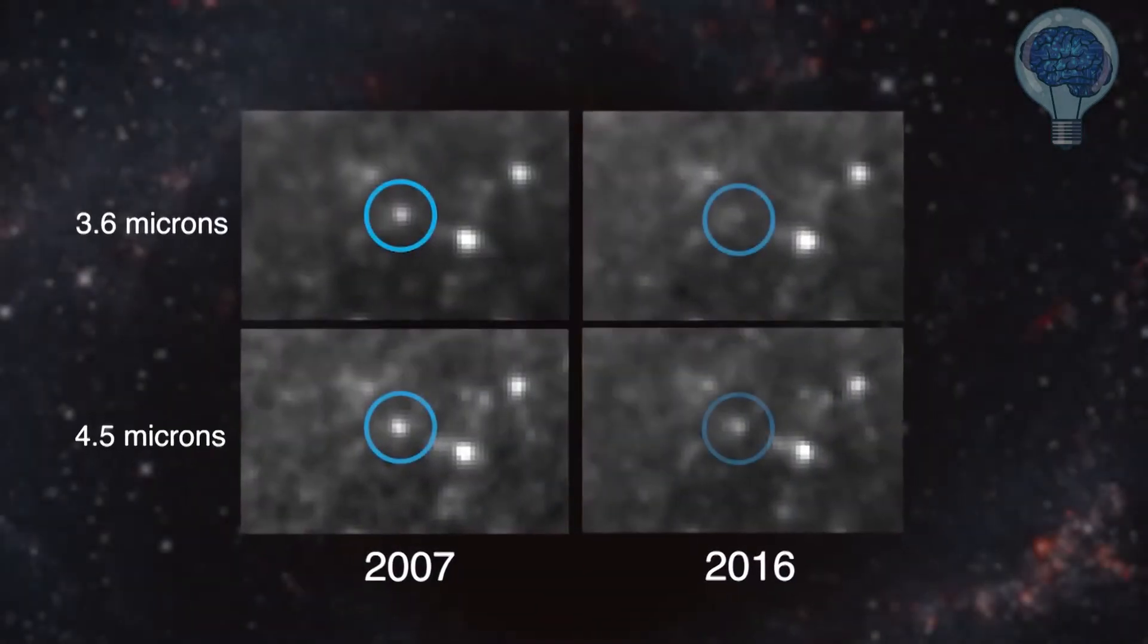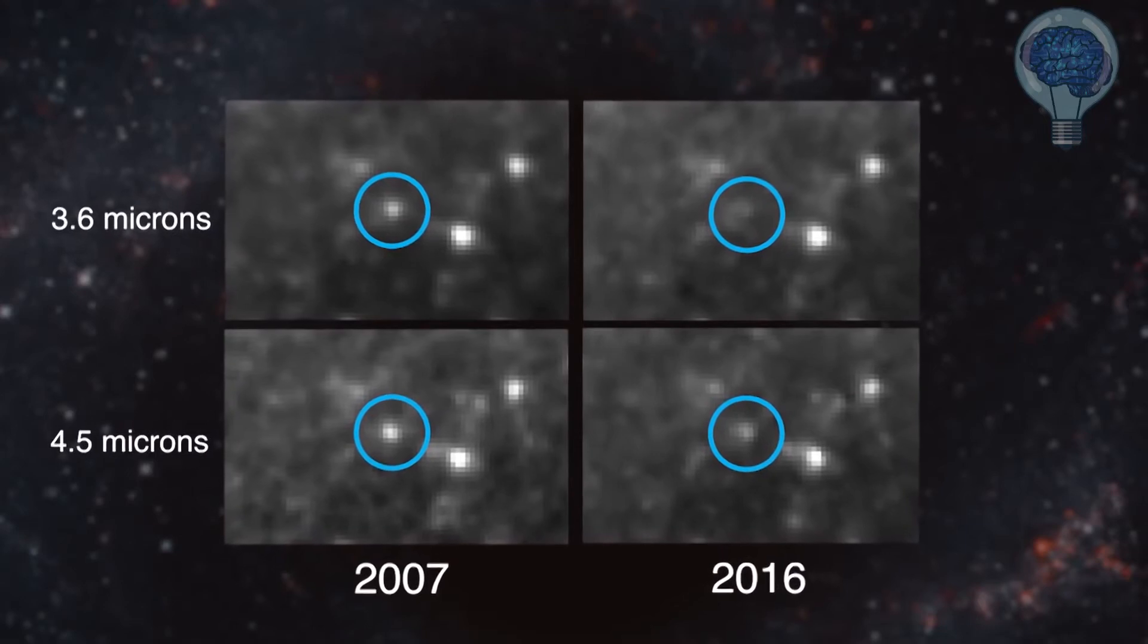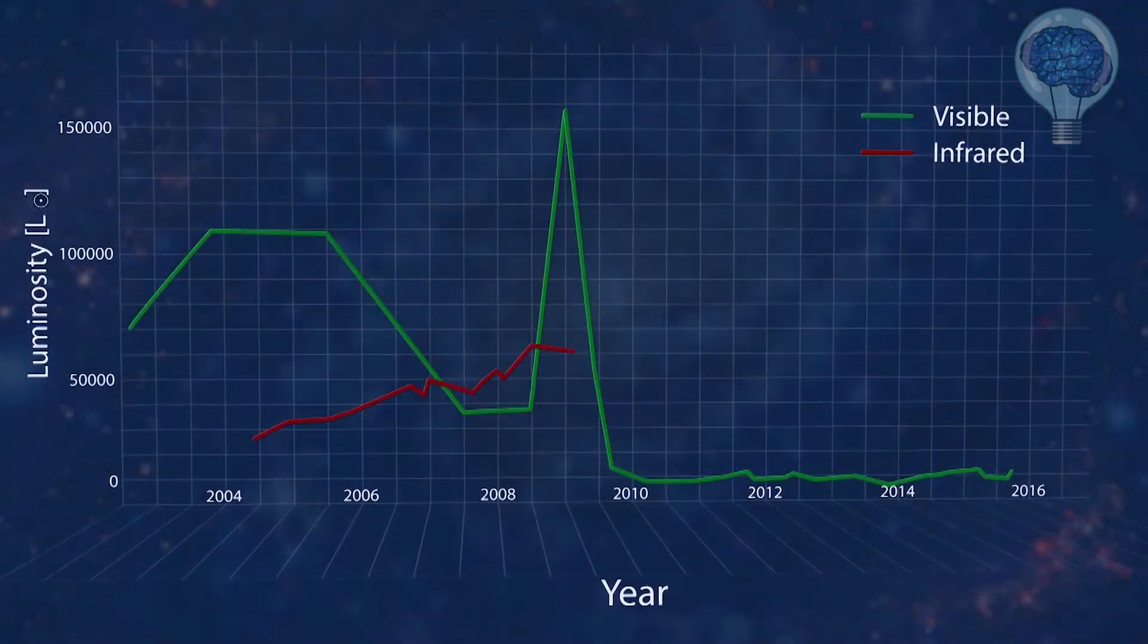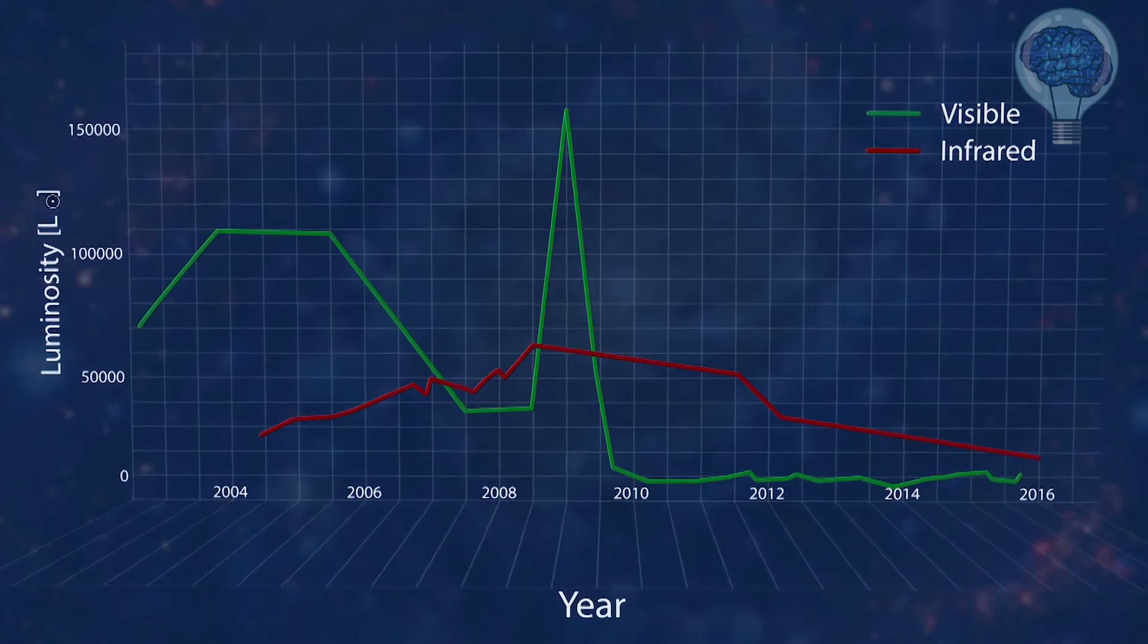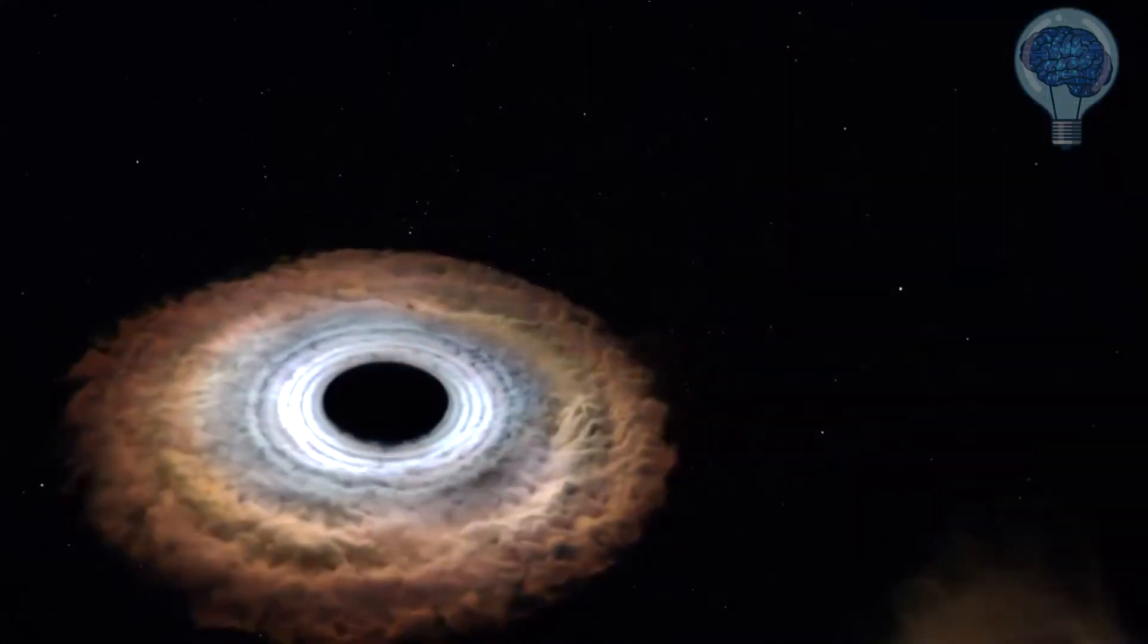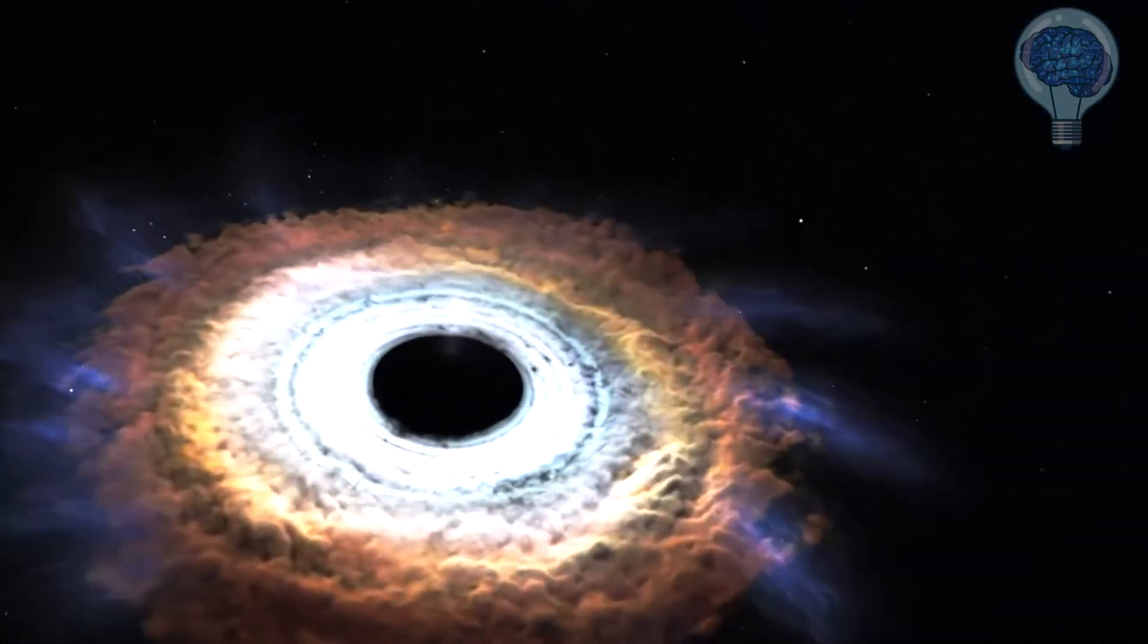What we see with Spitzer is there is some emission in the mid-infrared, but it's fading and fainter than what you would expect to see with a hidden star. The team thinks instead that this infrared light is from the heat of gas falling back onto the newly formed black hole.